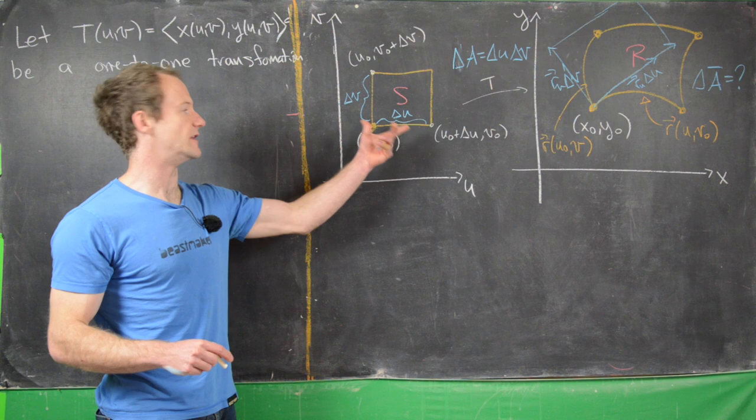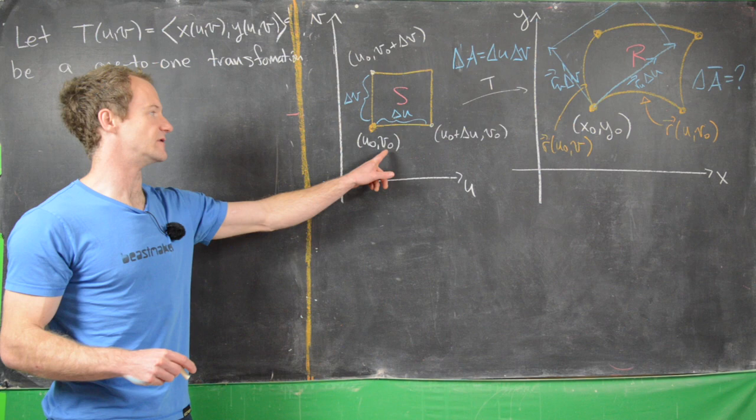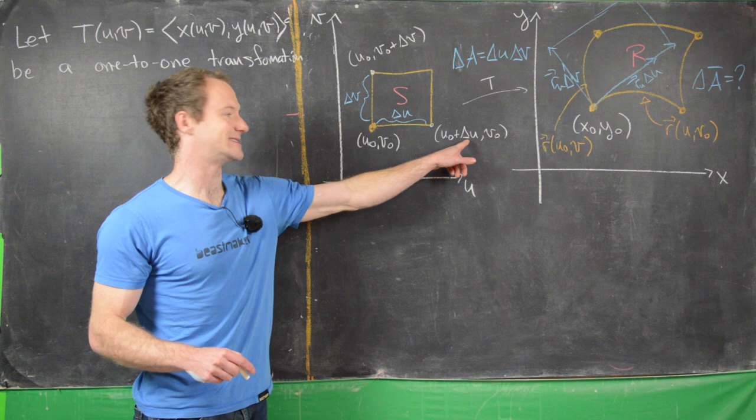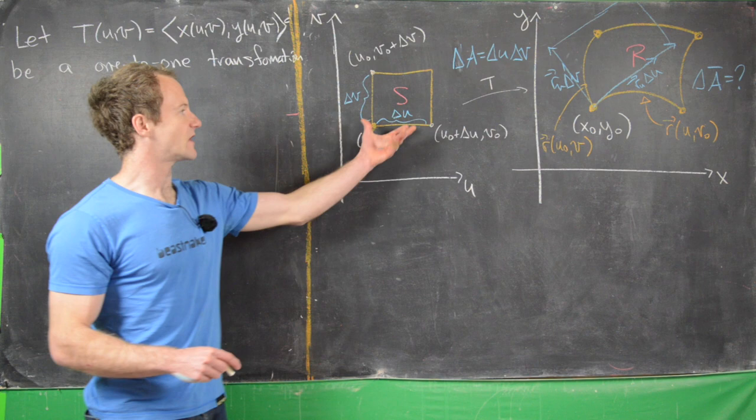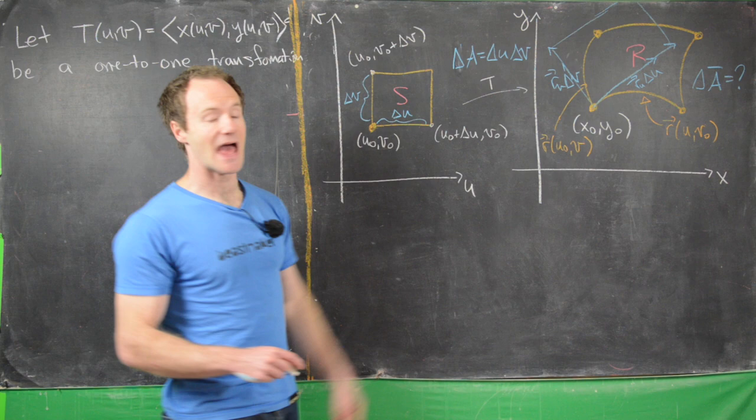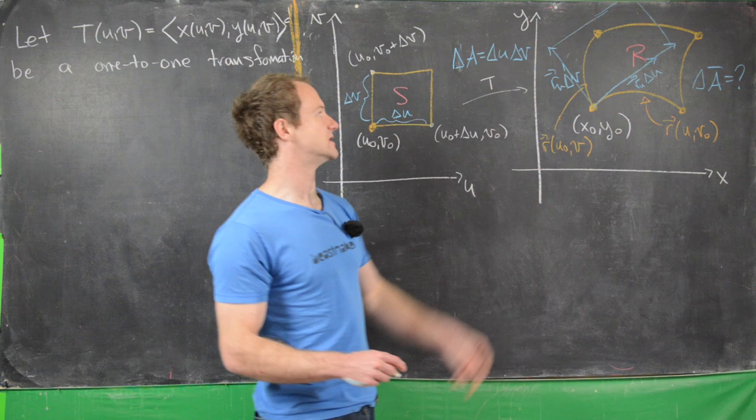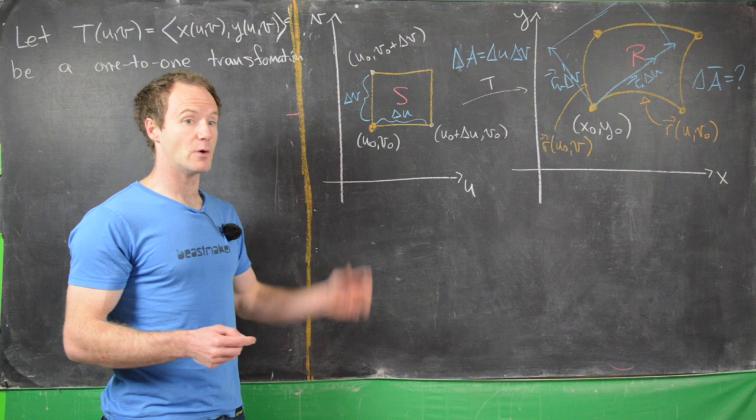We've got a rectangle in the uv-plane, based at the bottom left at the point (u₀, v₀). It has a length in the horizontal direction of Δu and a length in the vertical direction of Δv. So we've got this Δu by Δv rectangle, and the small area component ΔA is given by Δu times Δv — that's obvious because we've got a rectangle over here.